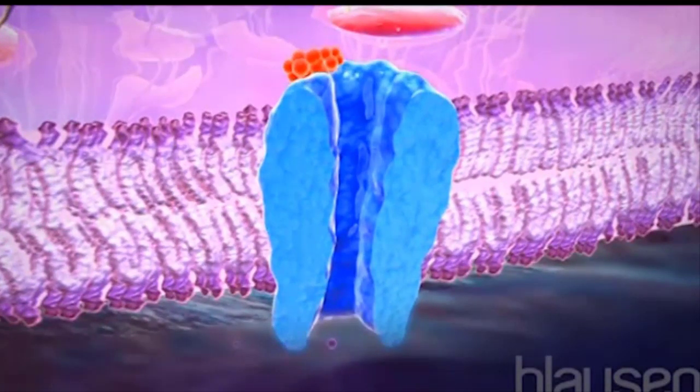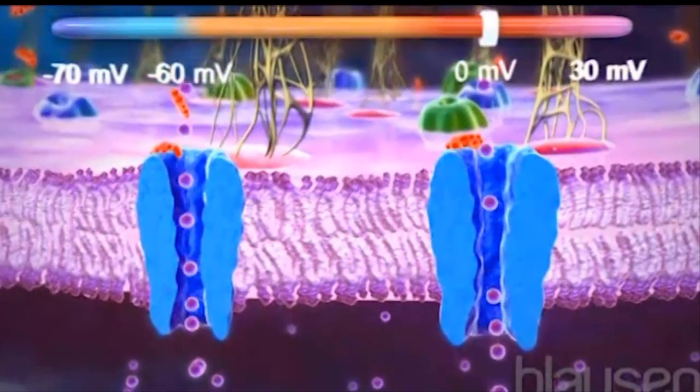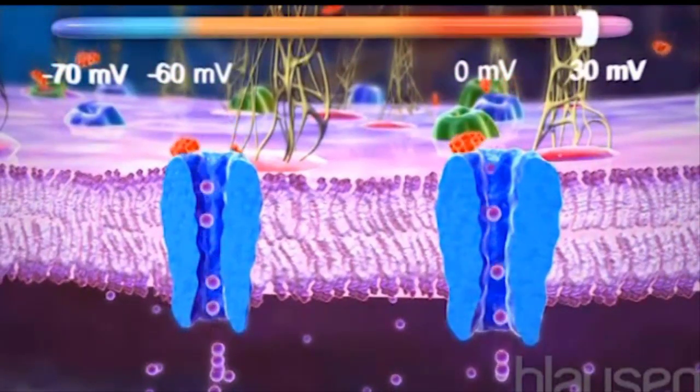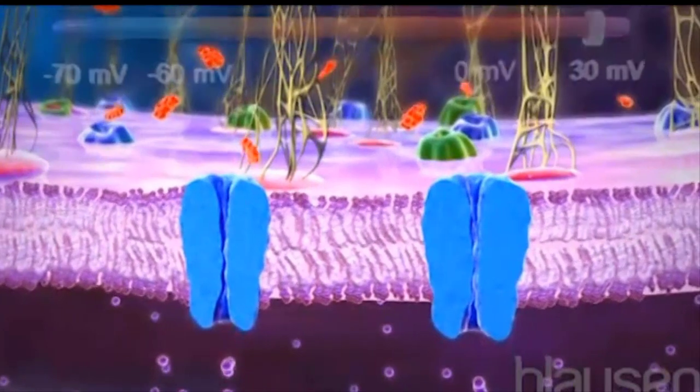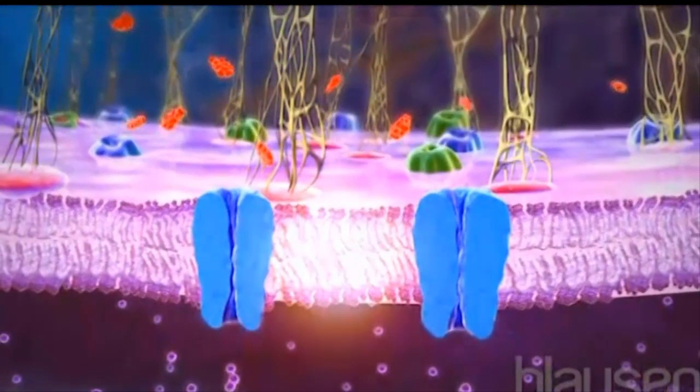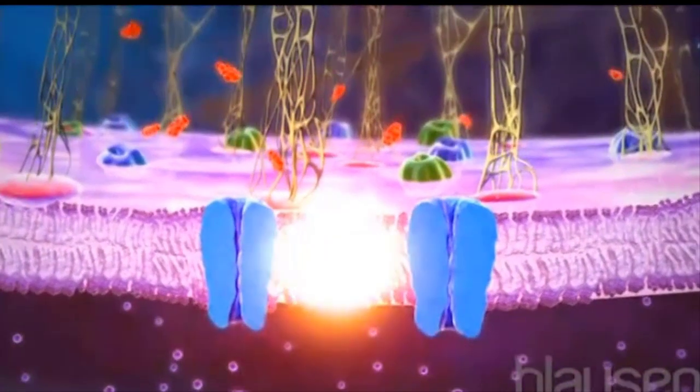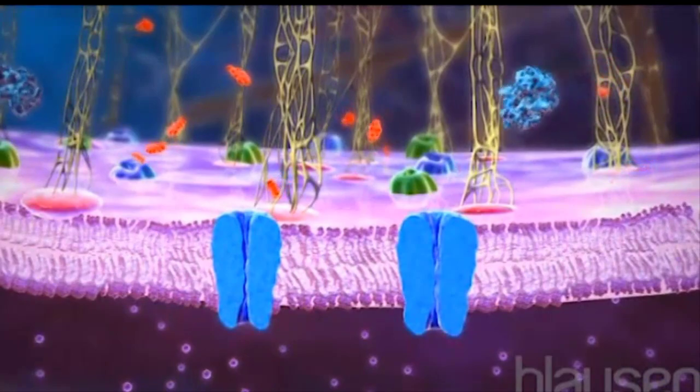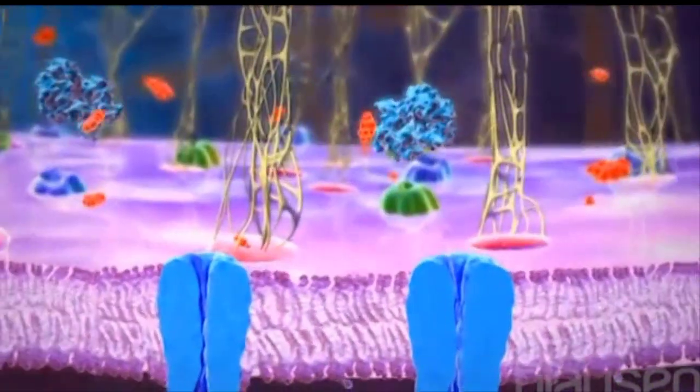This binding opens ion channels, allowing positive ions to enter and the membrane depolarizes. If this depolarization brings the postsynaptic neuron to threshold, it will result in an action potential or new electrical pulse.